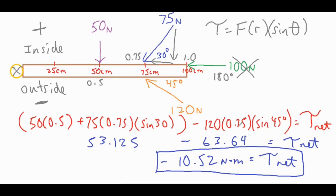And then I subtracted this orange force over here, which was the 120 times 0.75 times the sine of 45 degrees. Turns out that torque alone was greater than both of those combined, so you end up with a negative number based on how I notated it earlier. So it would be 10.52 newton meters of torque that is applied upwards on the screen from the outside to the inside.